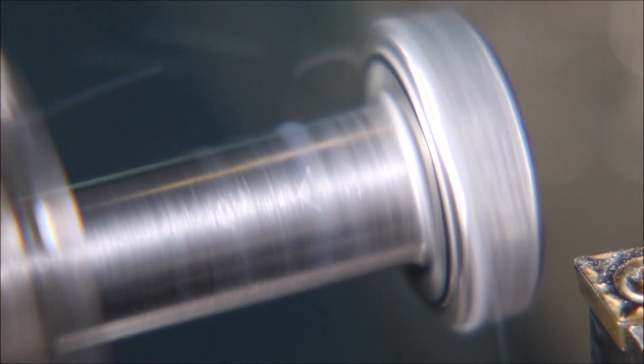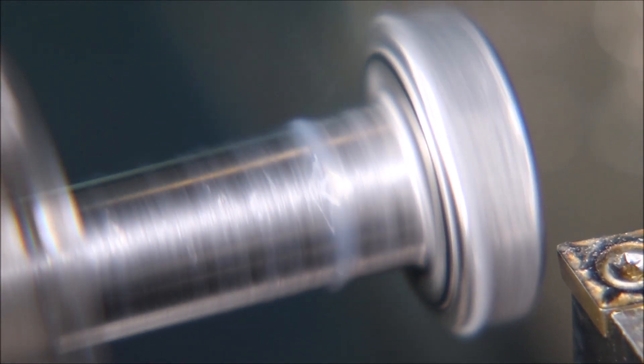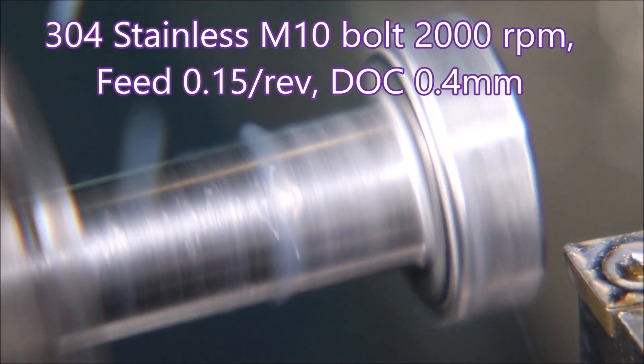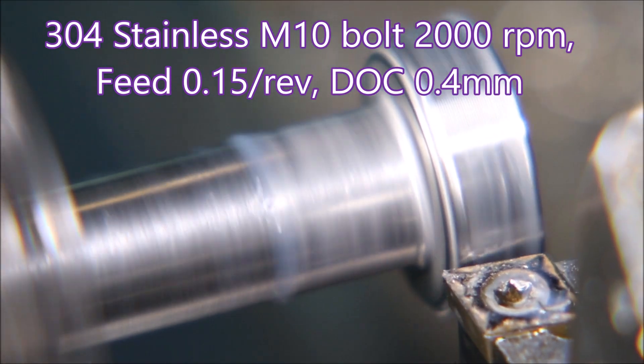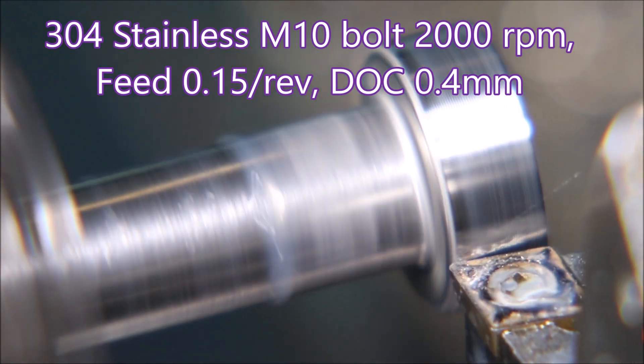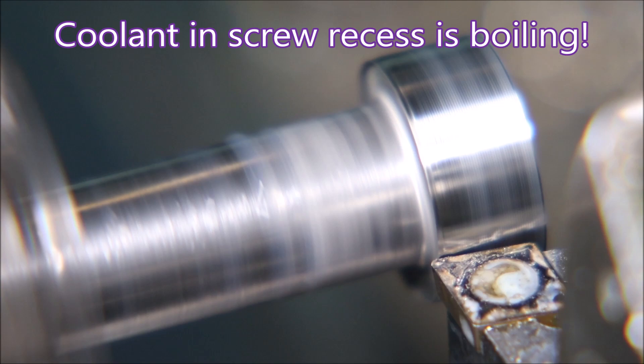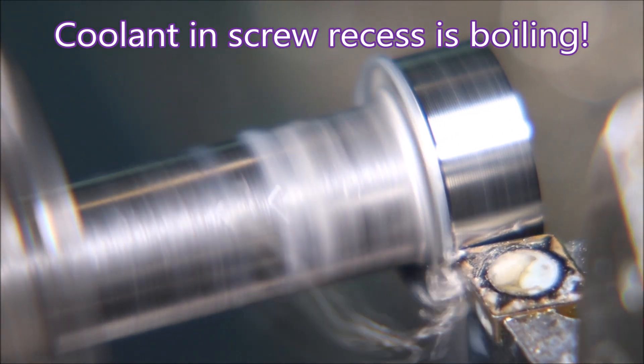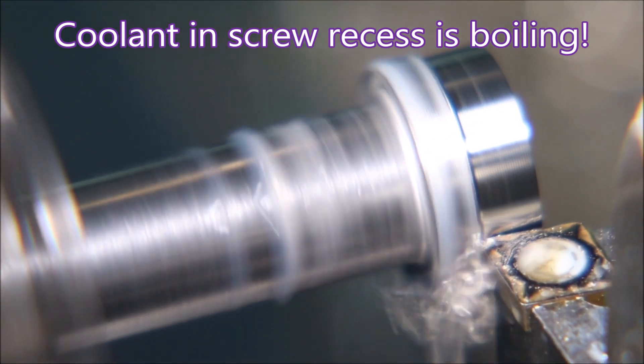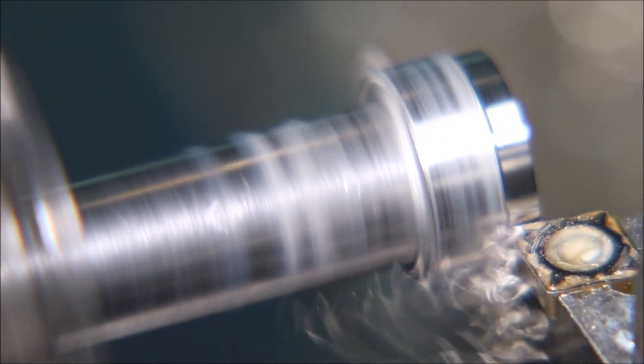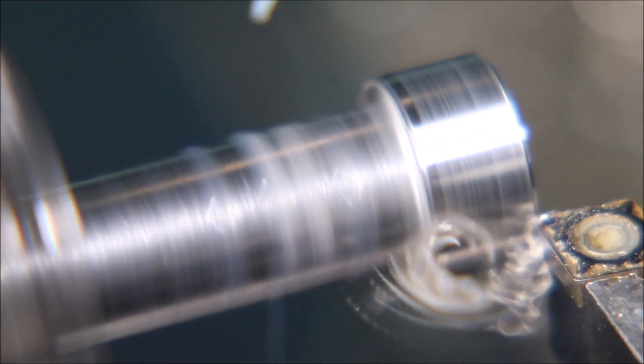These are some 304 stainless M10 bolts that I needed to machine the heads off. There you can see the cutting data - couldn't do much more than that really because it was drawing 4 amps and the machine is only rated to 5. And here you can see the coolant in the recess for the screw is actually boiling.